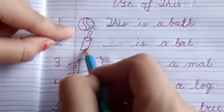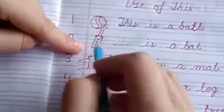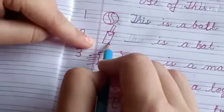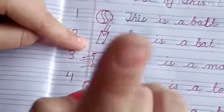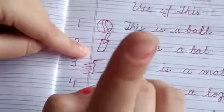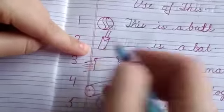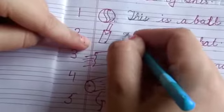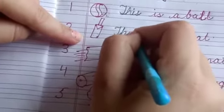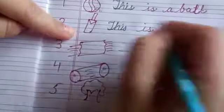Come to the next picture. What is this? This is a bat. This is only one bat and the bat is near us. This is a bat.